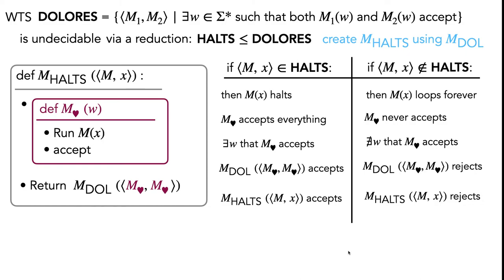A couple of things to note. First, we don't always need to check the input string when defining a Turing machine — in this case, we completely ignored whatever string w was, and that's totally fine. Second, even though in the presentation we did the construction and then the proof of correctness, the actual process often looks more like the REGULAR problem: you start your construction, leave some parts incomplete, go to your proof of correctness, let that inform tweaks to your construction, and go back and forth. Don't be disheartened — this struggle is part of the learning process, and the more you practice, the faster you'll come up with these constructions.